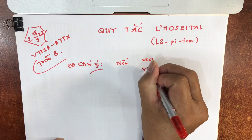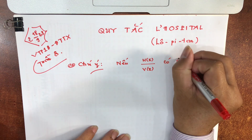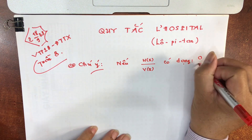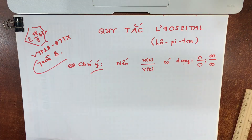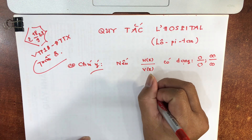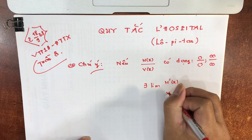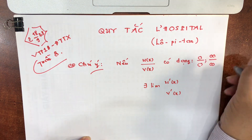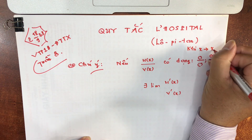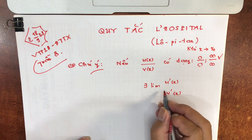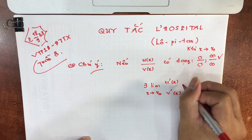Nếu cái biểu thức U(x) chia cho V(x) có dạng 0 chia 0 hoặc là vô cùng chia vô cùng khi x tiến về x₀, và đồng thời tồn tại giới hạn của U'(x) chia V'(x) khi x tiến về x₀, giả sử là giới hạn này bằng A, thì đây là hai giả thiết của quy tắc Lobitan.